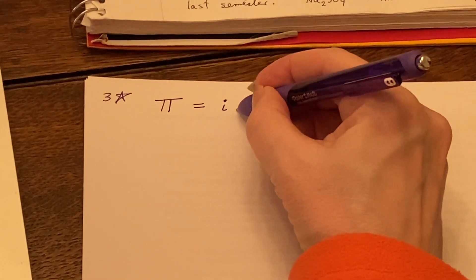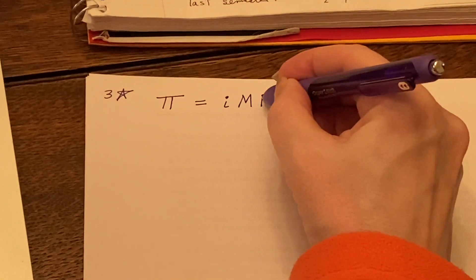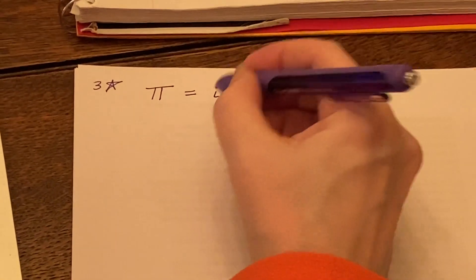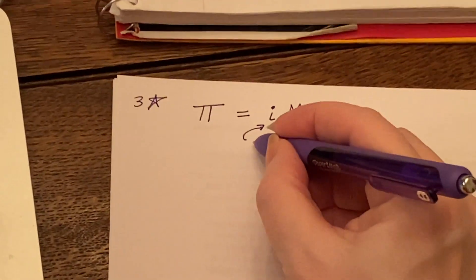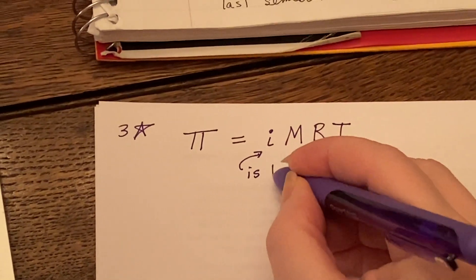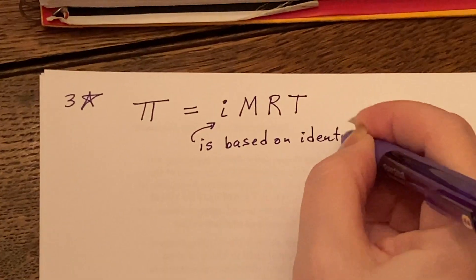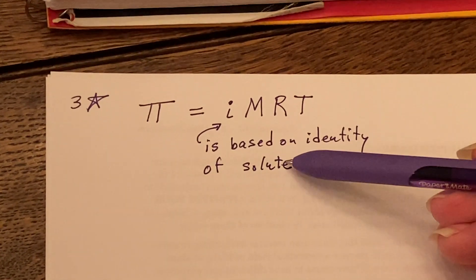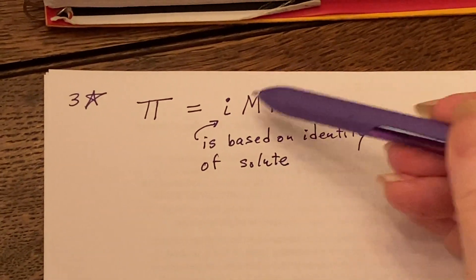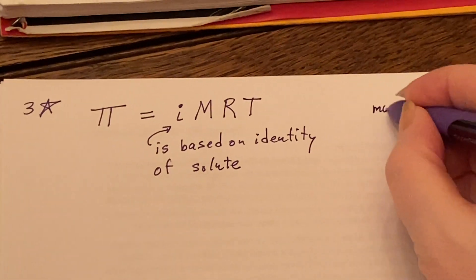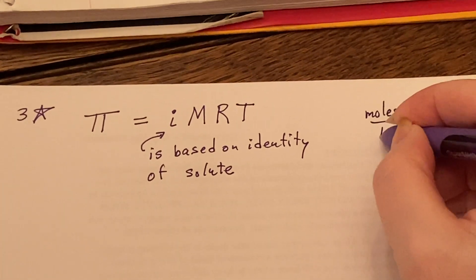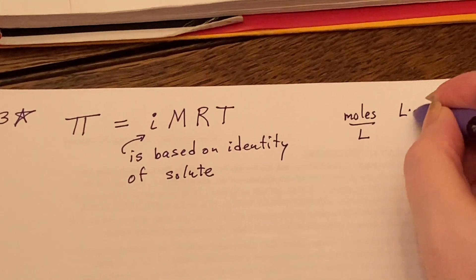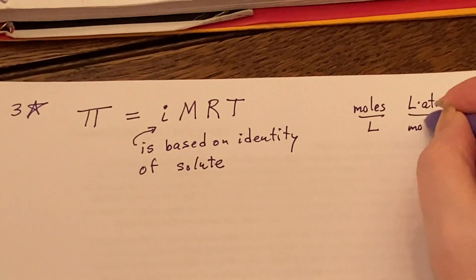Because you will see this in a slightly different format, if you end up taking the ACS exam you will see it as π = iMRT. We'll talk about i a little bit more soon, but i for right now we will simply say that this is based on the identity of the solute. Now it does not have any units associated with it. Molarity, we know the units for molarity—that's moles per liter.